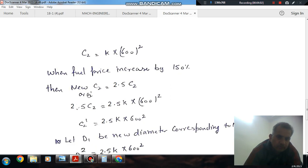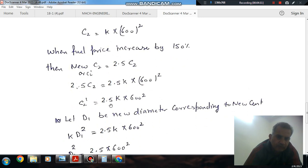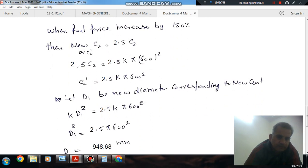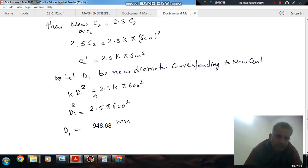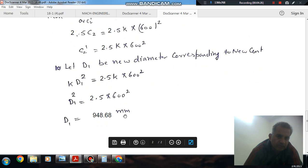New C2, or C2 dash, will be 2.5 times C2. And this is 2.5 times K times 600 squared. And C2 dash will be 2.5 K times 600 squared. And C2 dash will be 2.5 K times 600 squared, and D1 will be 948.6 mm, which is the new diameter corresponding to the new cost.